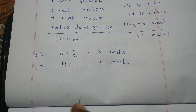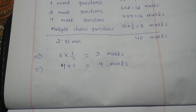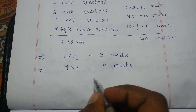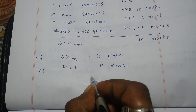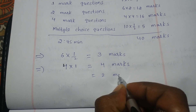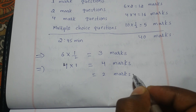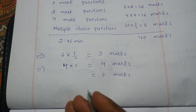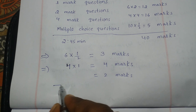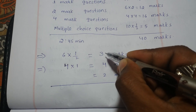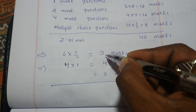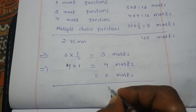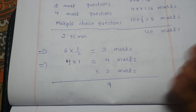In multiple choice questions, if you are getting two marks — by keeping A, B, C, or D, even blindly — you will get two marks. So calculations like that: 3 plus 4 is 7, 7 plus 2 is 9, almost 10 marks we are getting just for attempting.